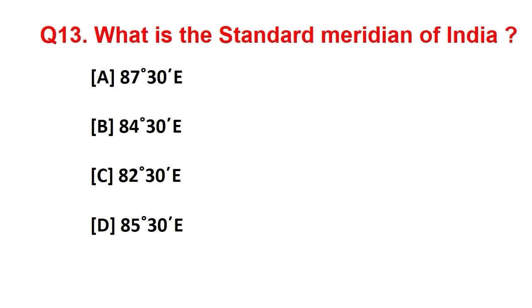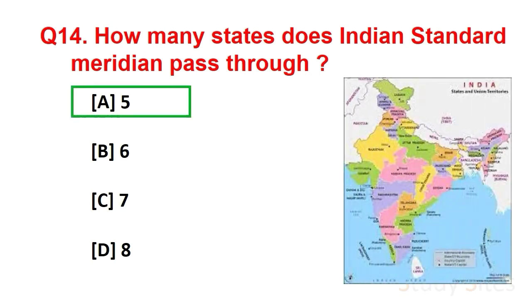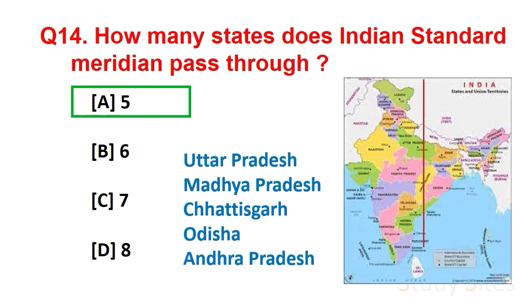Question number 13. What is the standard meridian of India? Answer is 82 degree 30 minute east. Question number 14. How many states does India's standard meridian pass through? Answer is 5. And they are Uttar Pradesh, Madhya Pradesh, Chhattisgarh, Odisha and Andhra Pradesh.